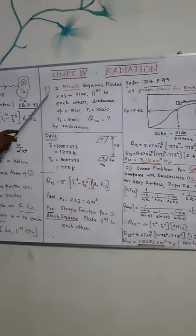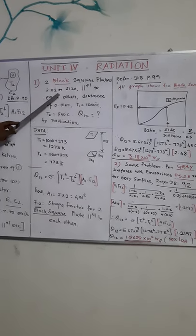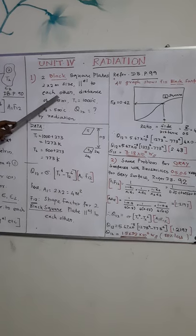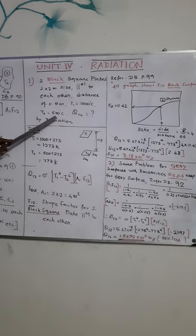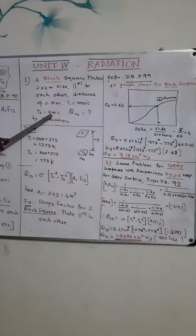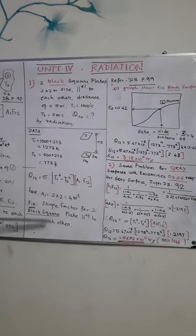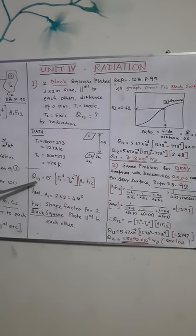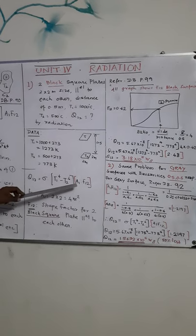Let us consider a problem, first one. Two black square plates of size 2 cross 2 meter, they are parallel to each other at a distance of 0.5 meter. With a source, one is at 1000 degree, another one is at 500 degree centigrade. If you ask to find out what is the radiation, very simple one. We know that, as we discussed earlier, the formula will be sigma into T1 power 4 minus T2 power 4, A1, F1, 2.